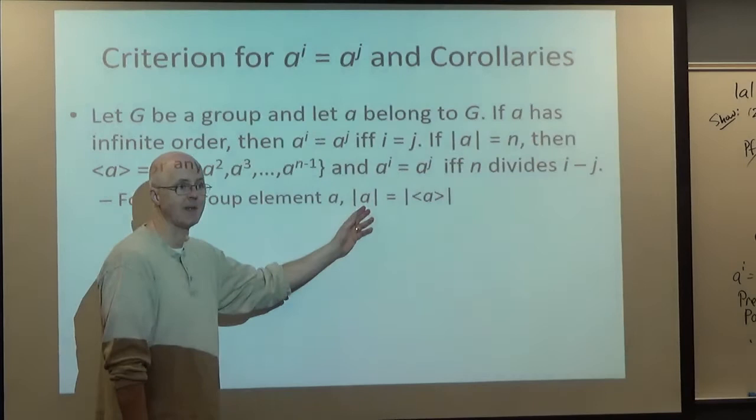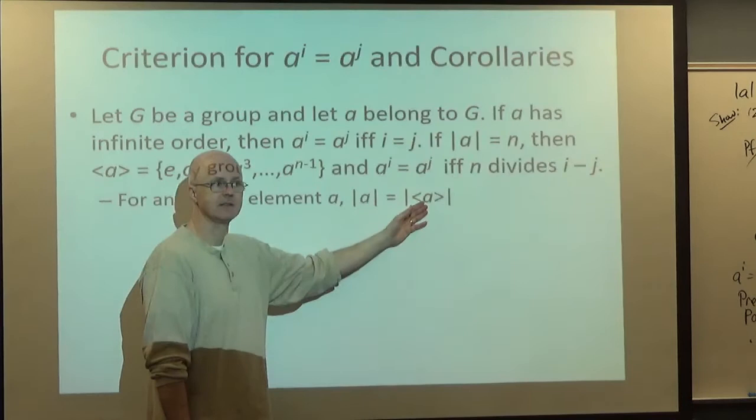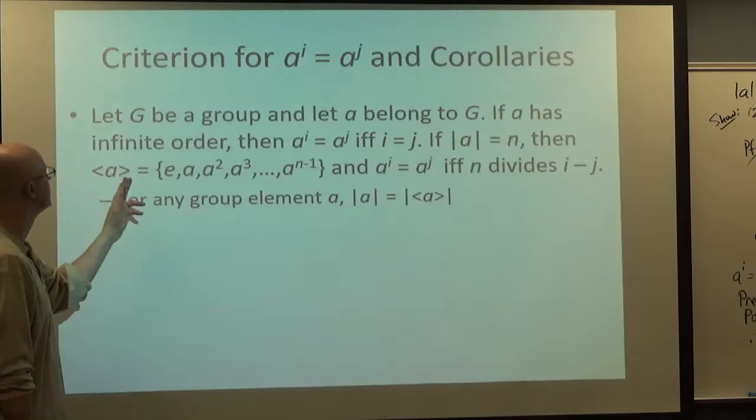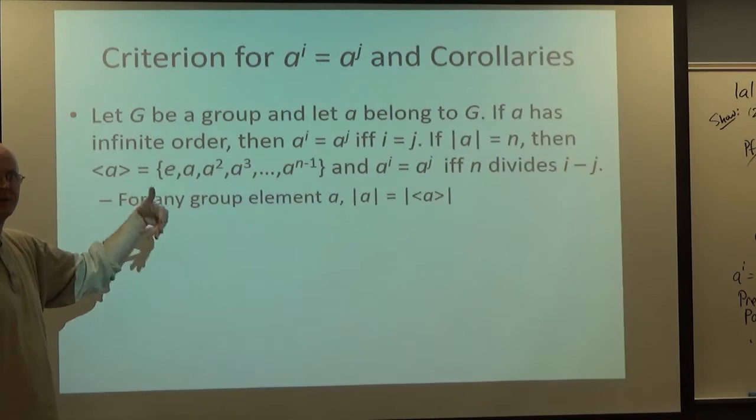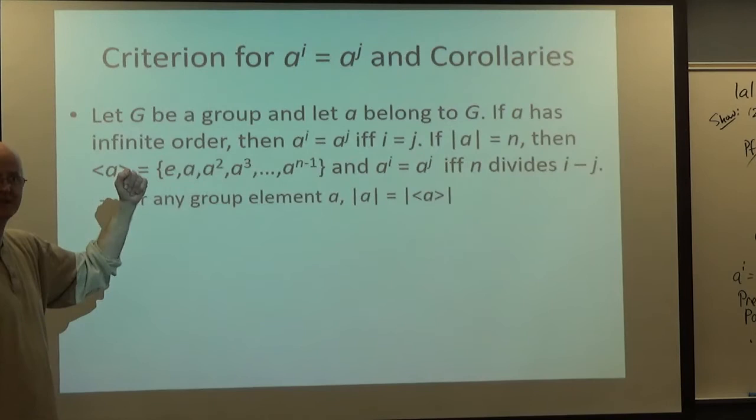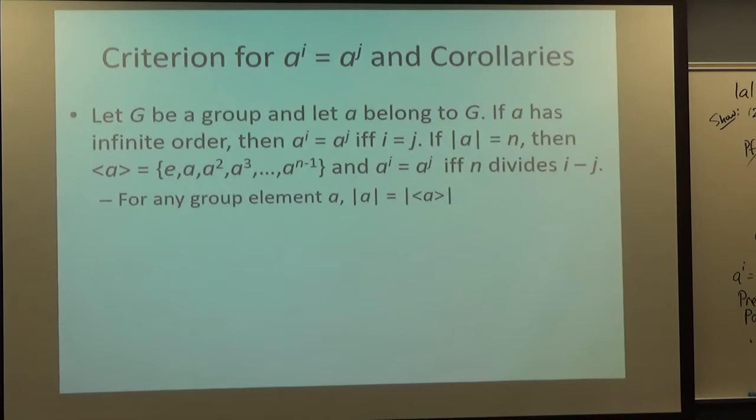Moving on, there are corollaries. Corollaries follow quickly from theorems. For any group element, the order of the element is the same as the order of the cyclic subgroup it generates. In other words, the smallest positive integer power of a that makes a^N equal E is the same as the number of elements in the cyclic subgroup it generates. If the order of a is N, then this is the cyclic subgroup it generates. There are N things in there. And we also know that a^N is E. Corollaries follow pretty immediately from theorems.